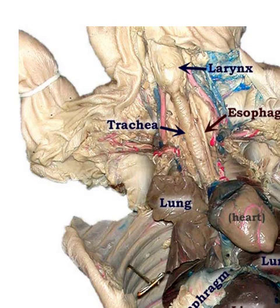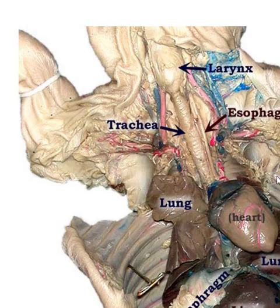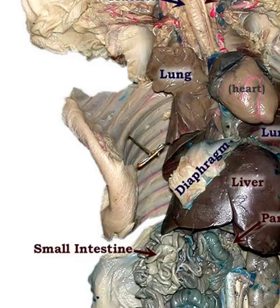Here's the heart — if they hadn't removed the lung you'd see it sticking in better. Your diaphragm comes up, goes over, and rests on the liver, dividing the abdomen from the thoracic region.